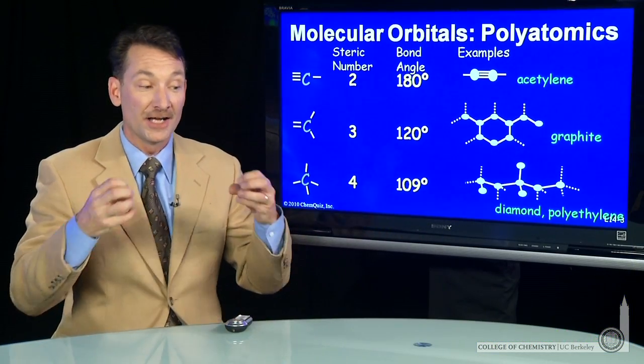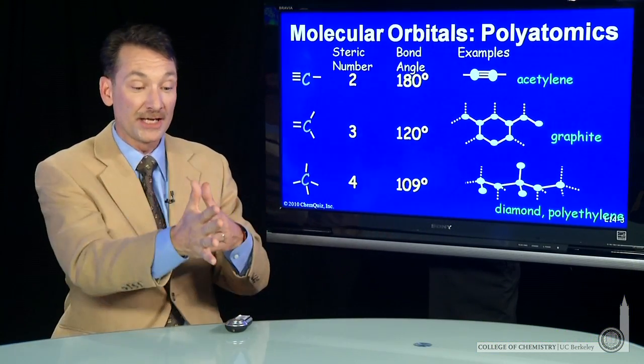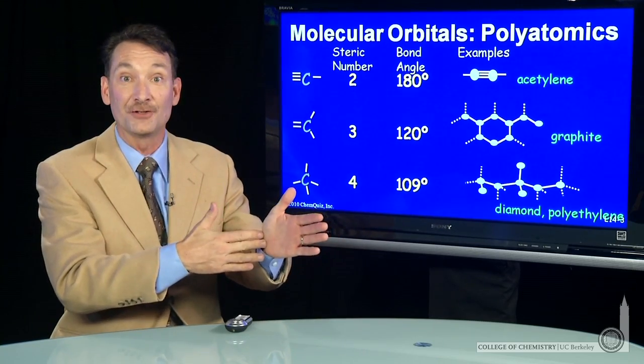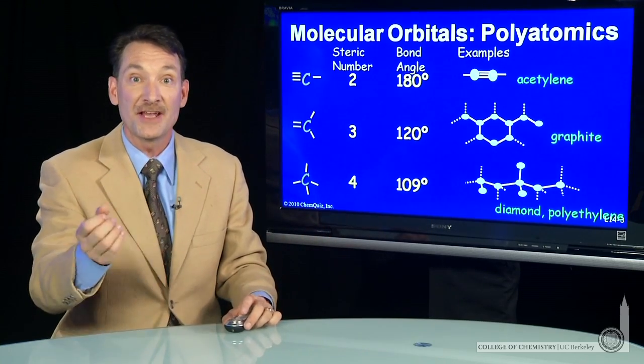So what I need are a set of atomic orbitals where I can combine them and get the various angles for the various steric numbers, and that's what we'll look at next.